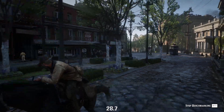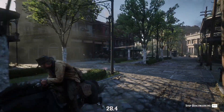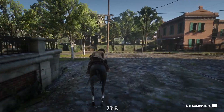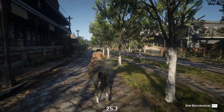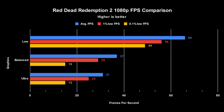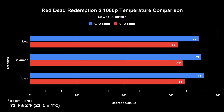Next, moving on to more modern games, I tested Red Dead Redemption 2 with its in-game benchmarking tool. I tested low, balanced, and ultra graphics settings. Personally, for this game I'm probably choosing the balanced option, because even the 1% low is just under 30 FPS, which to me is very playable. As we increase the graphics settings, the temperature slightly rises for the system, but nothing alarming at all.